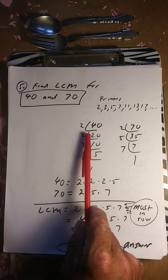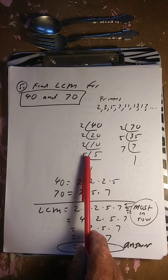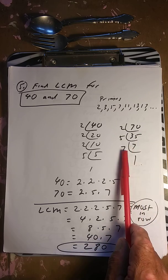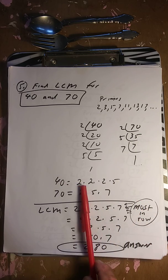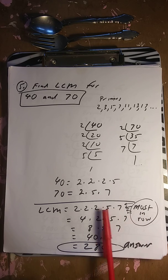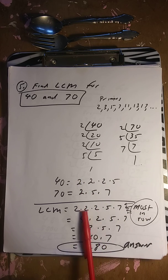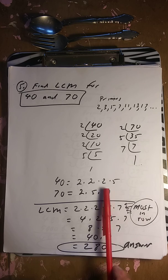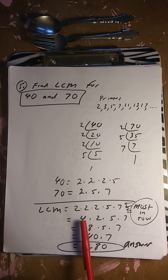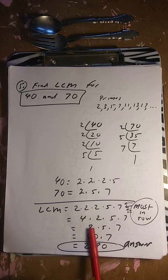Find the LCM of 40 and 70. For 40: divide by 2 to get 20, by 2 to get 10, by 2 to get 5, by 5 to get 1 — so 40 is 2, 2, 2, and 5. For 70: divide by 2 to get 35, by 5 to get 7, by 7 to get 1 — so 70 is 2, 5, and 7. Taking the most in a row: 2, 2, 2, then a 5, and a 7. So 2 times 2 is 4, times 2 is 8, times 5 is 40, times 7 is 280. The LCM is 280.